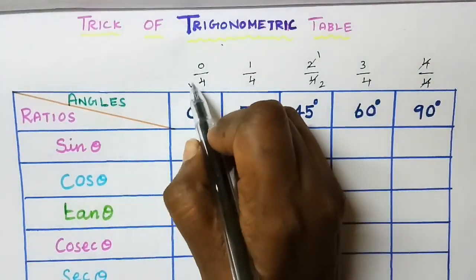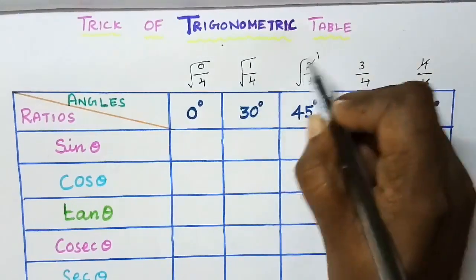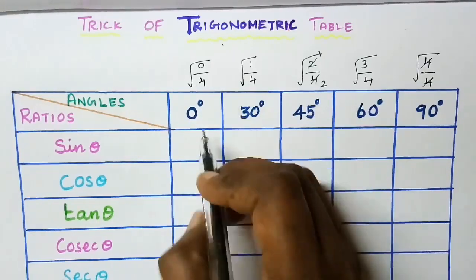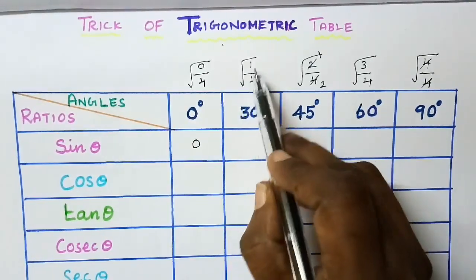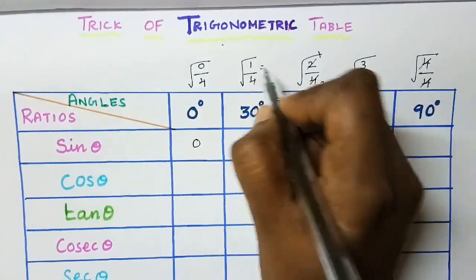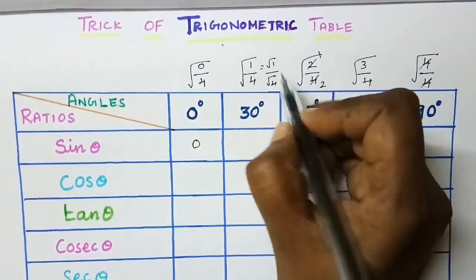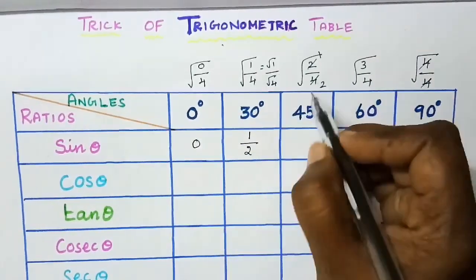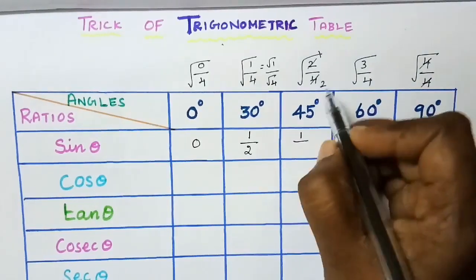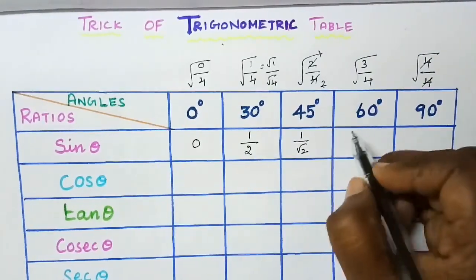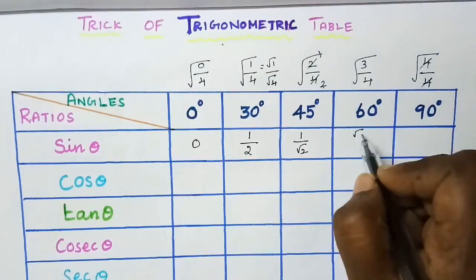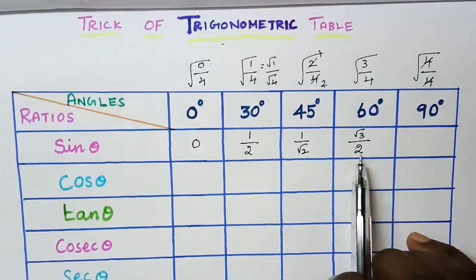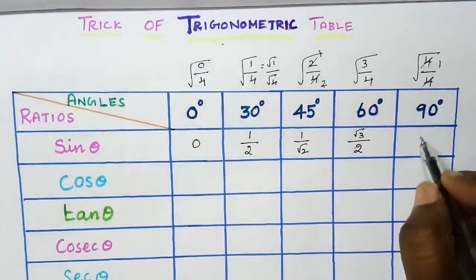Now take the square root of all the numbers. 0 by 4 is 0 itself, so write 0. Next, square root of 1 by square root of 4 — square root of 1 is 1 and square root of 4 is 2, giving 1 by 2. Then square root of 2 over 2, square root of 3 over 2, and square root of 4 over 2 which is 2 over 2, that is 1.